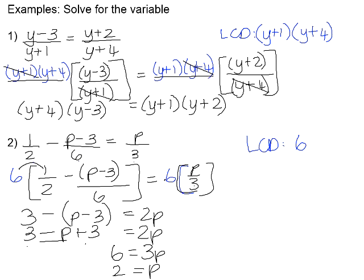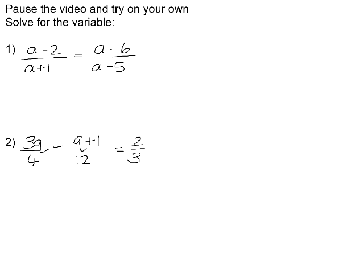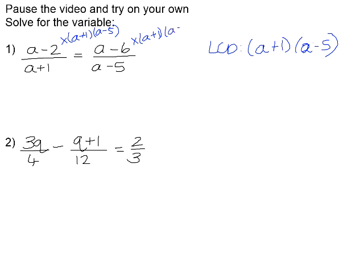In your homework book there are some examples for you to try — please pause the video and try these examples. For number 1, the lowest common denominator is (a+1)(a−5). So we multiply both sides of the equation by (a+1)(a−5). Simplifying: a plus 1 divided by a plus 1 cancels to 1, leaving (a−2)(a−5) on the left-hand side.